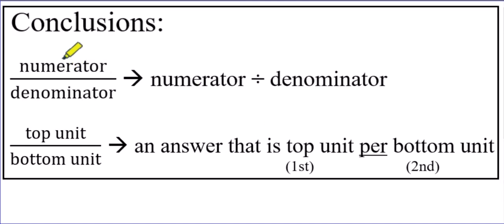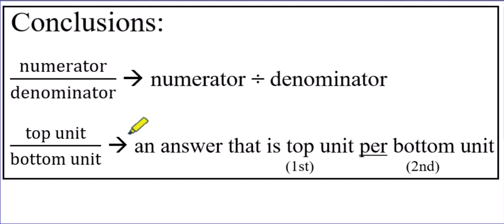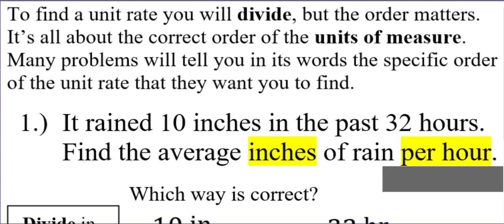You can start making some conclusions. Numerator over denominator — in your calculator, do the numerator's number divided by the denominator, in that order. Whatever is the top unit will be your first unit in your answer. Whatever is the bottom unit will be the second unit that comes to the right of the word per when you're writing out your unit rate. Many problems will tell you, in its words, the specific order of the unit rate that they want you to find.